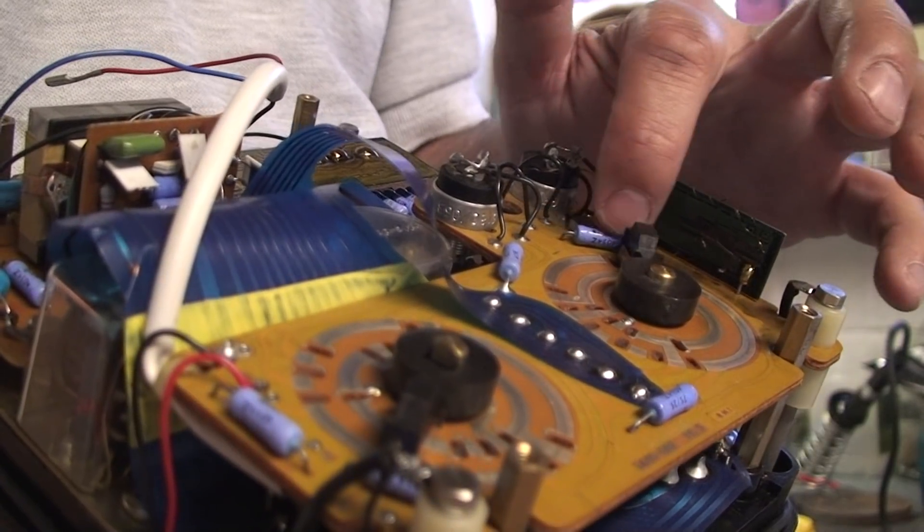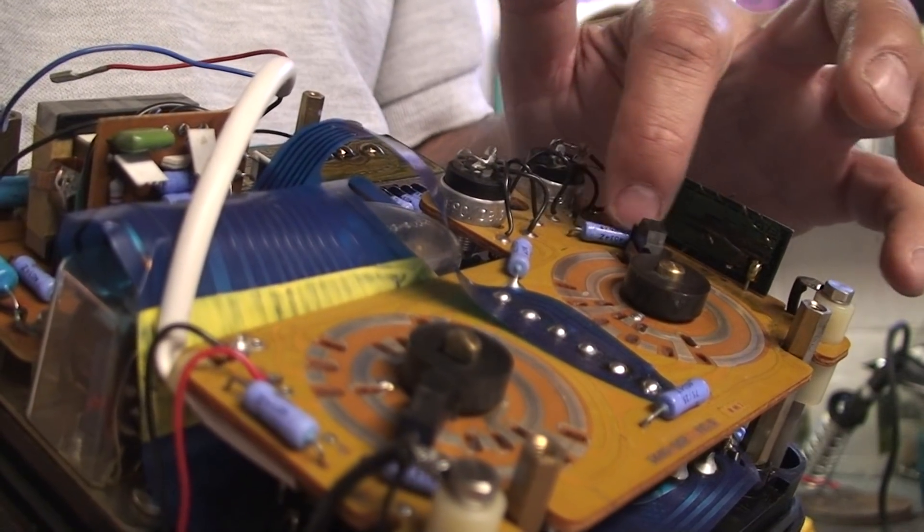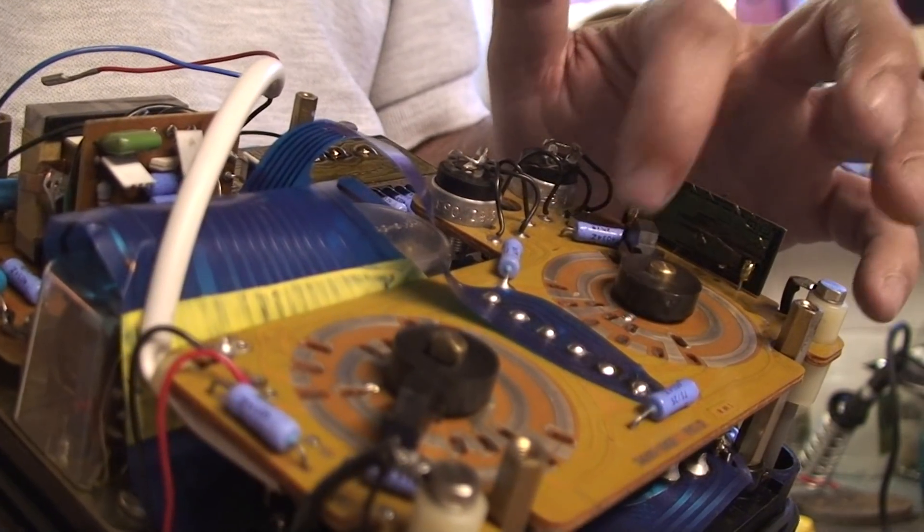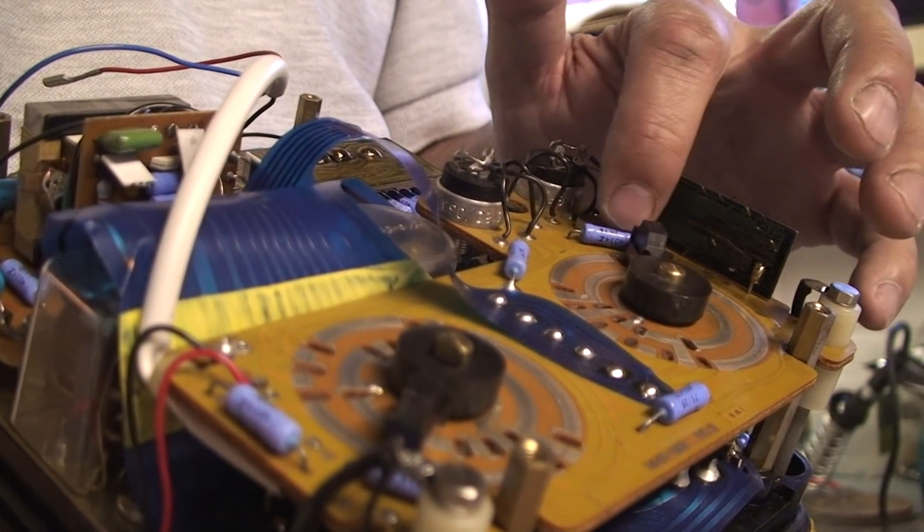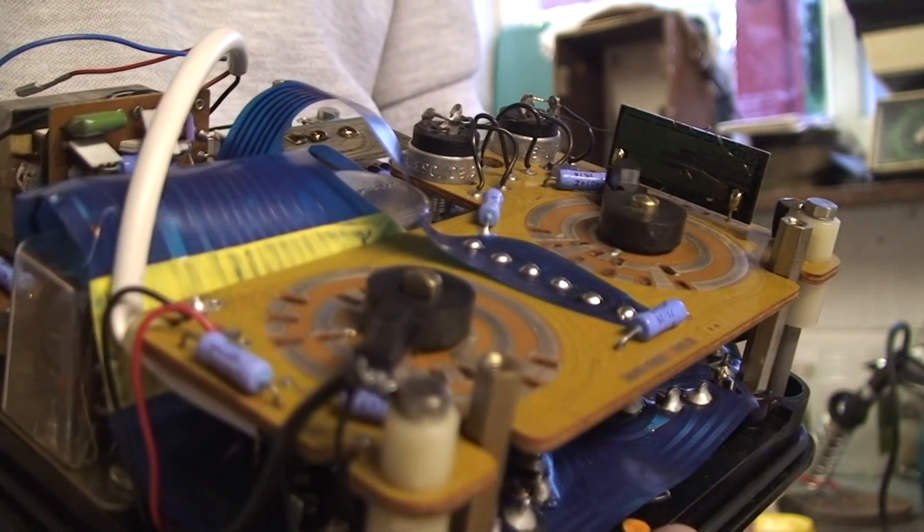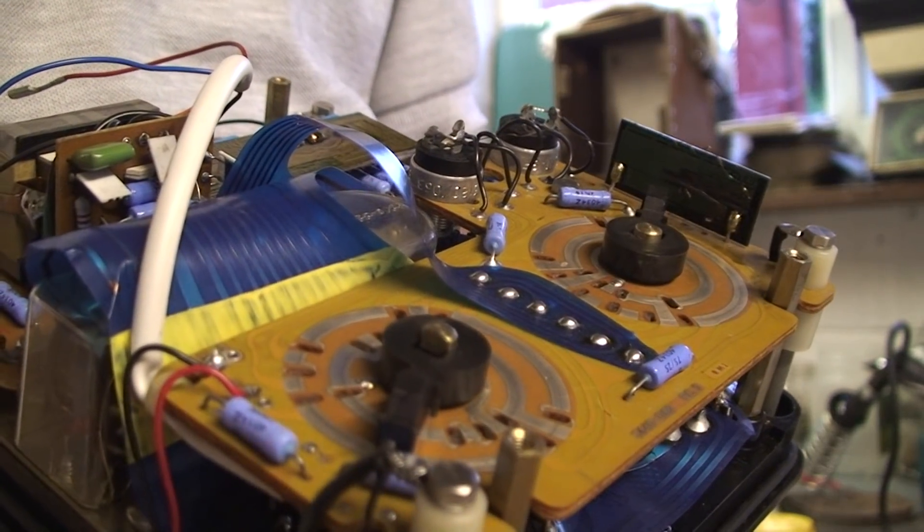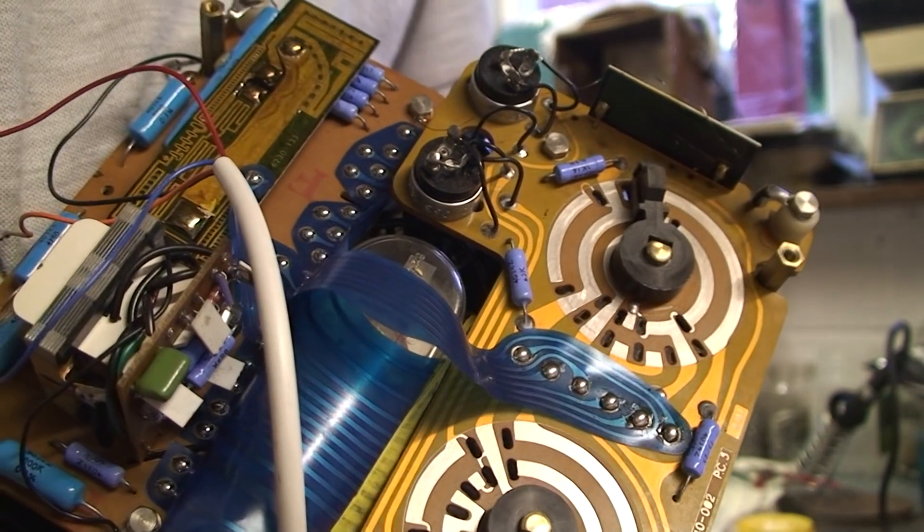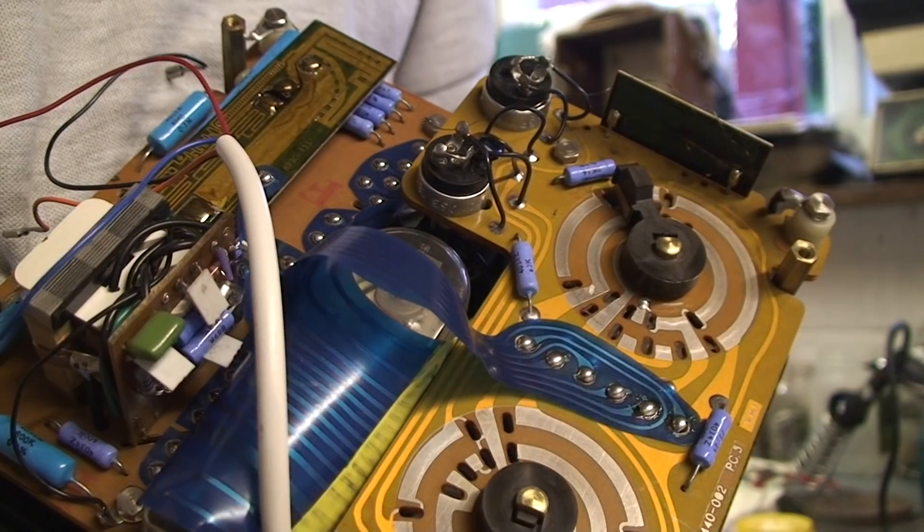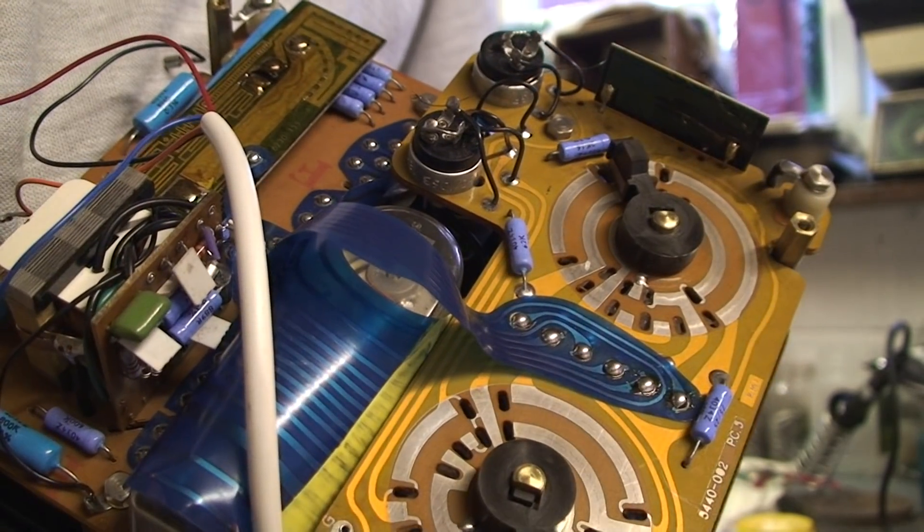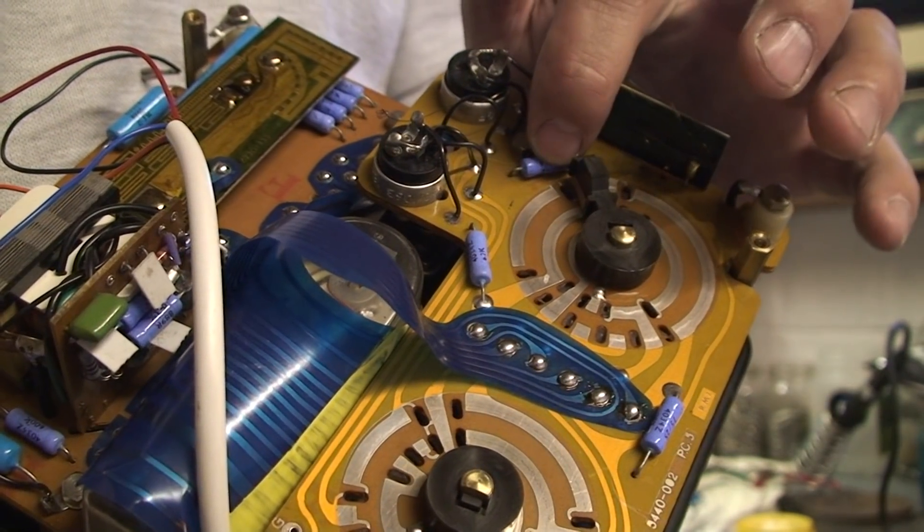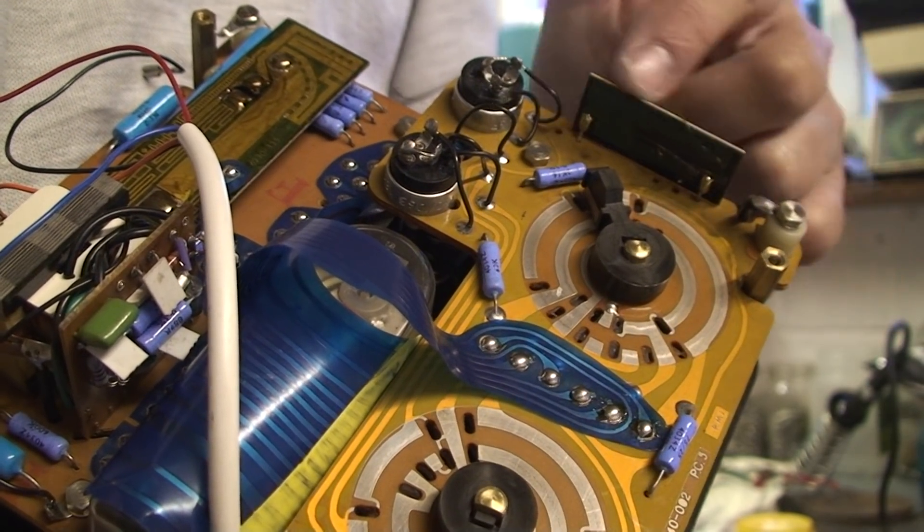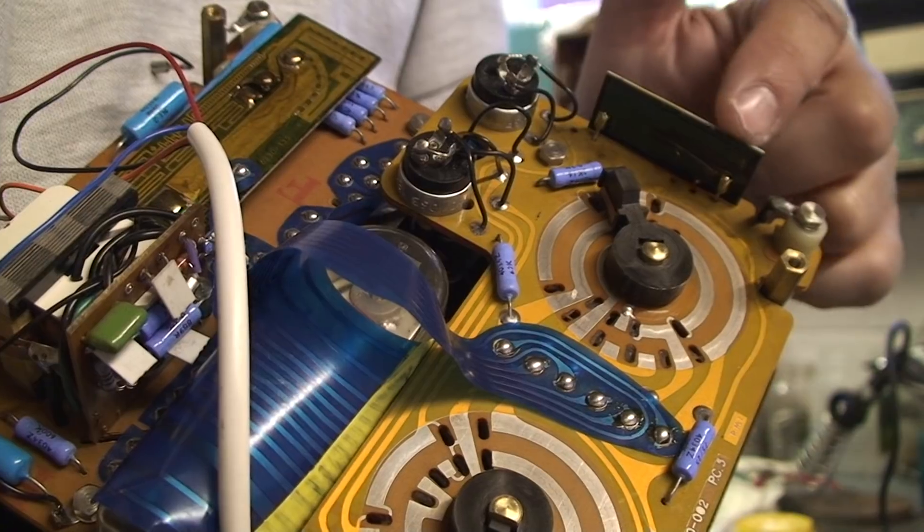But this is not the problem because it's not going through this one, it goes through first. If you turn this milliamp scale there to there, it looks like it's going through this one, but in actual fact it goes through the R1 resistor.